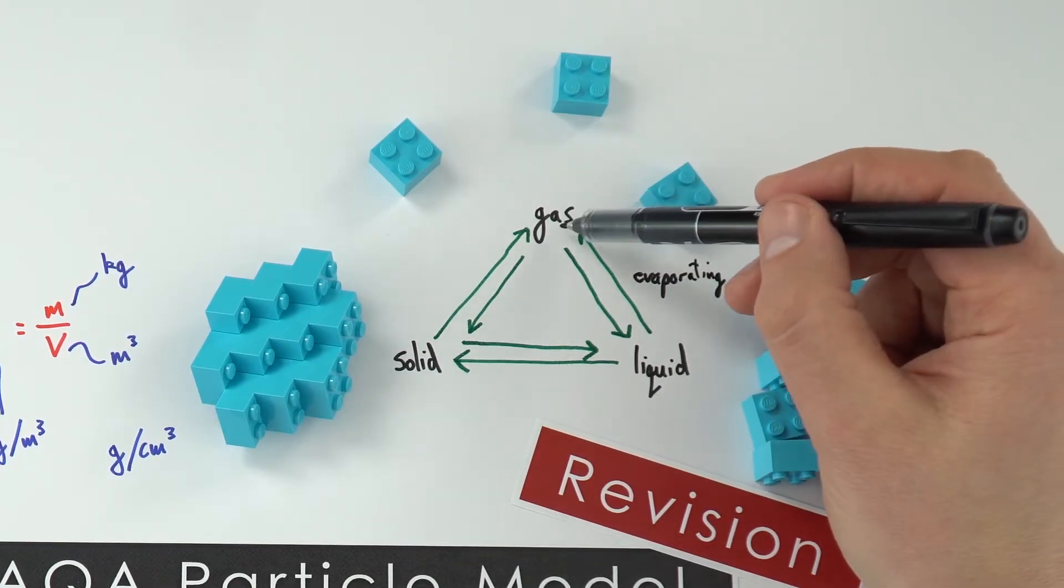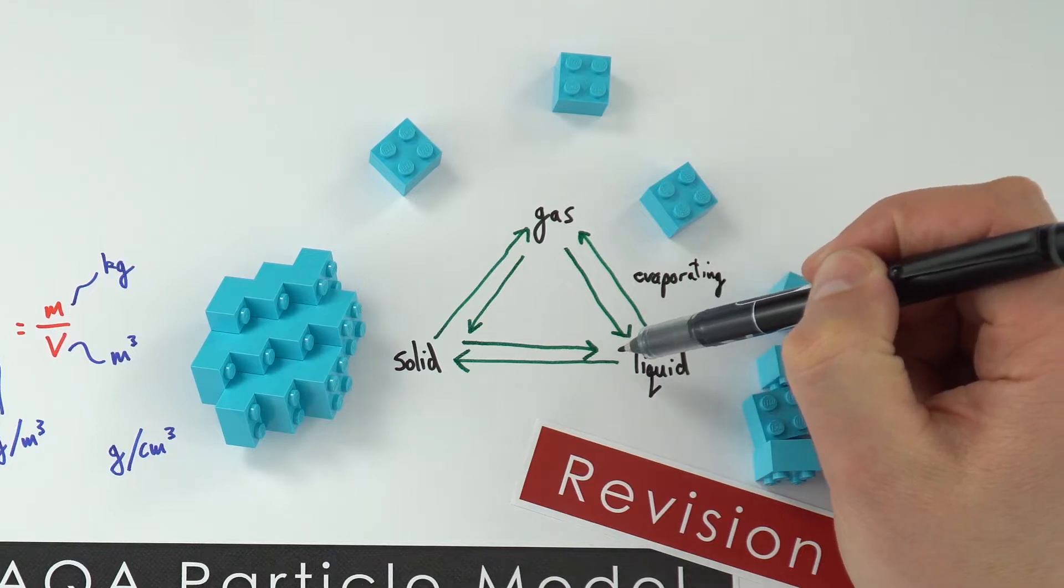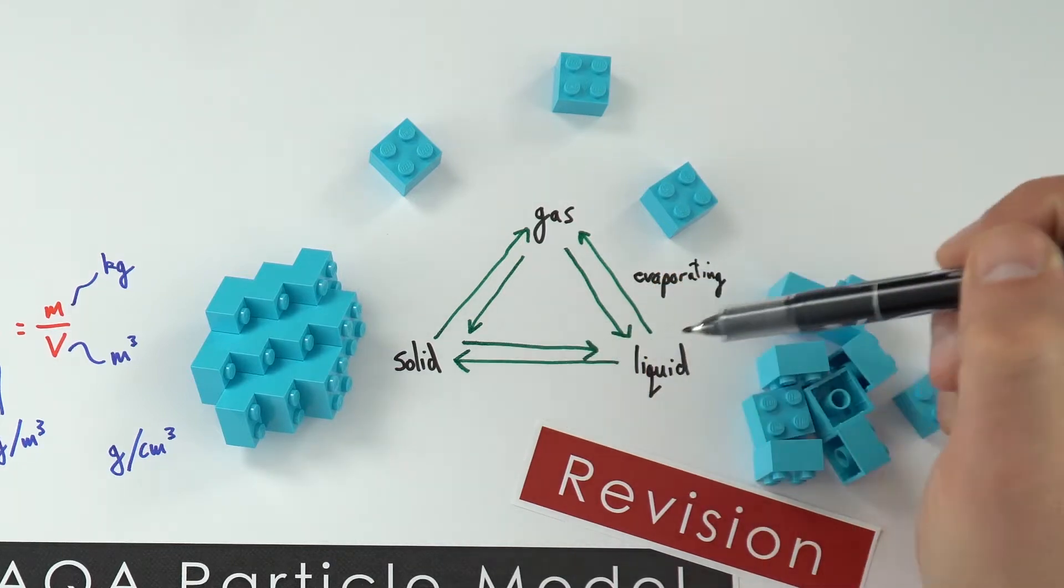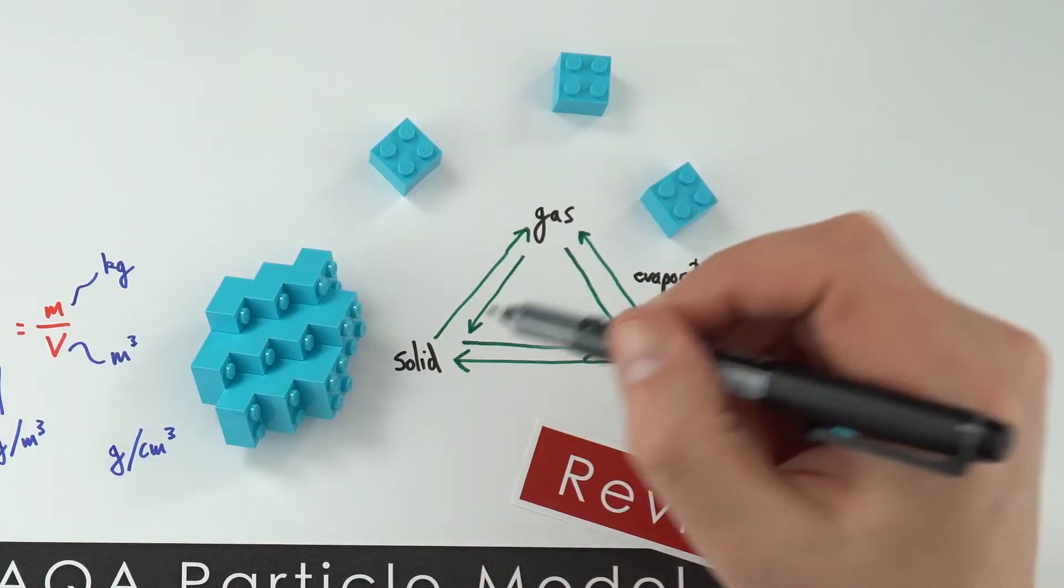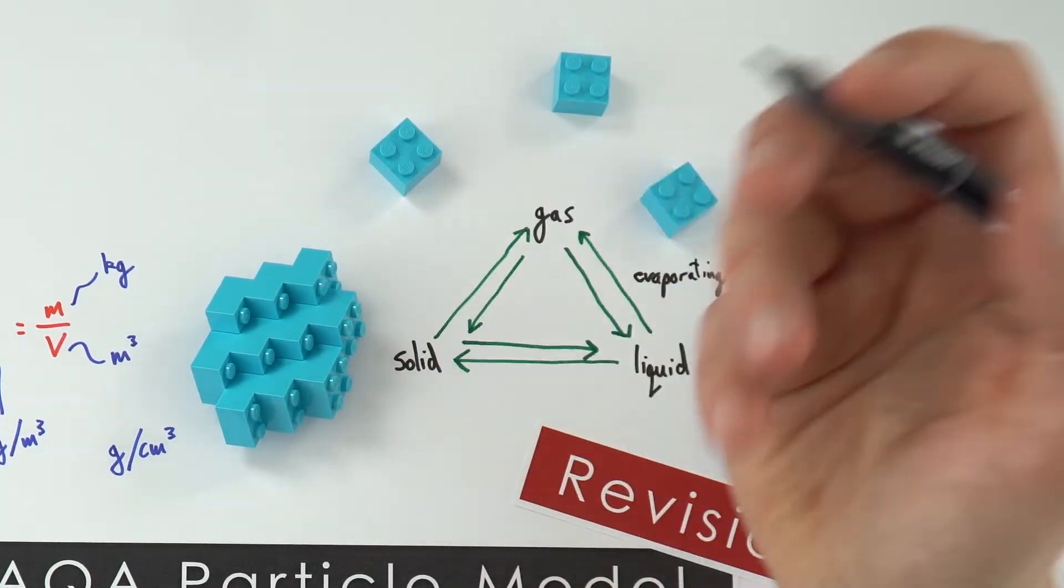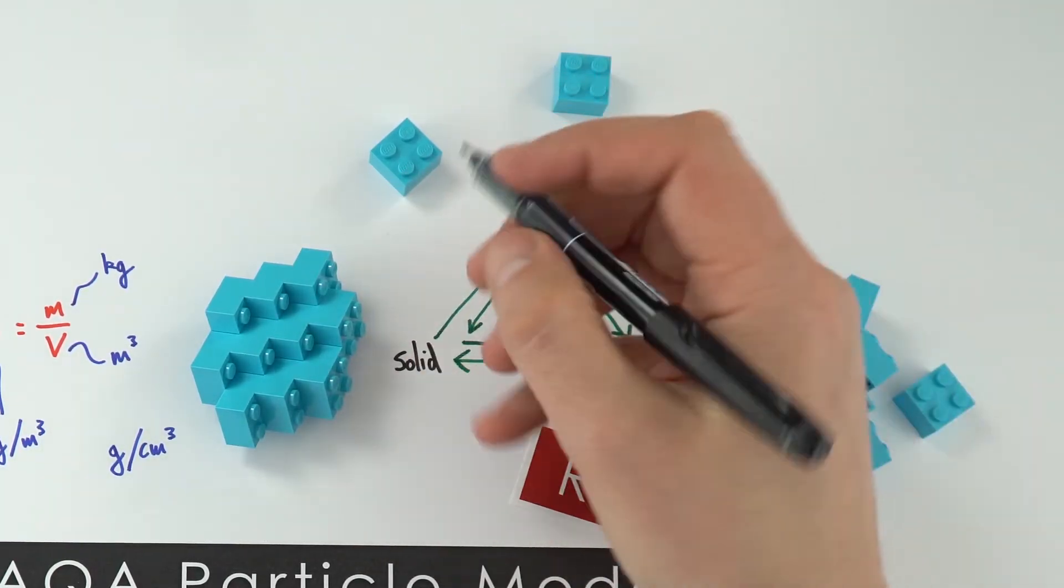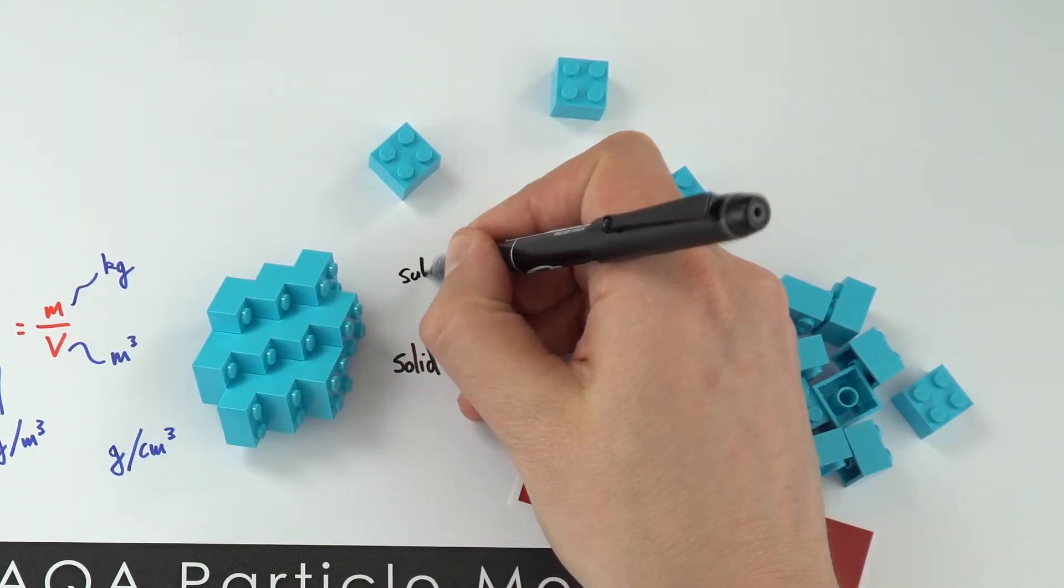Going the other way, we have gas that condenses to a liquid, and then the liquid freezes to a solid. But what we also have sometimes is a solid that turns directly into a gas. You might have seen this with some carbon dioxide pellets. This is what we call subliming.